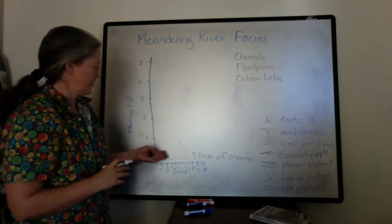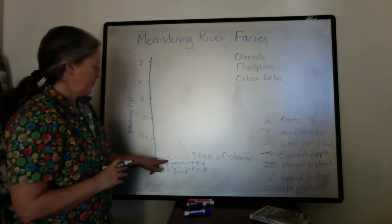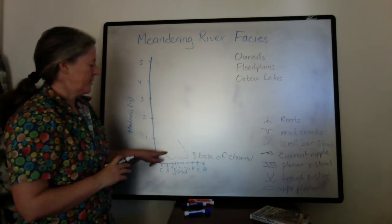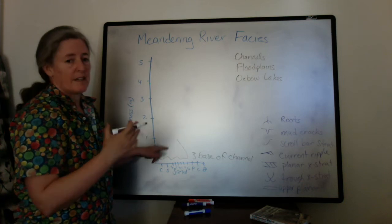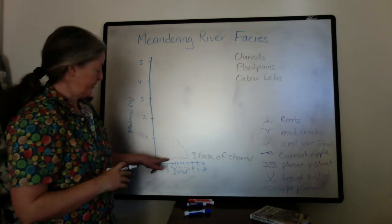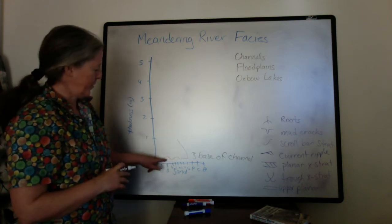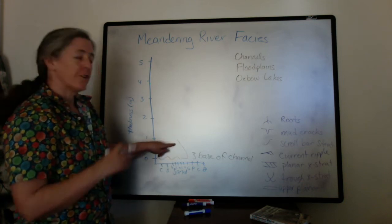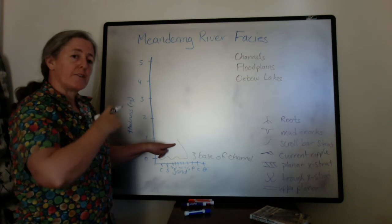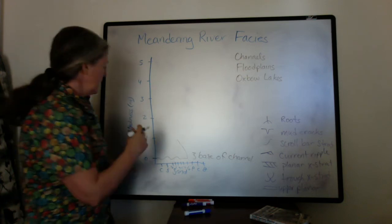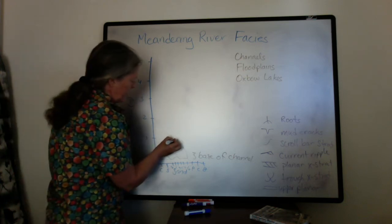We can use Walther's Law. We have the base of the channel, and if we go up one side, it's erosional — so we have erosion on the bottom. If we go up the other side, the grain size fines upward.